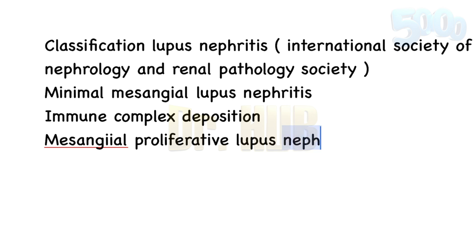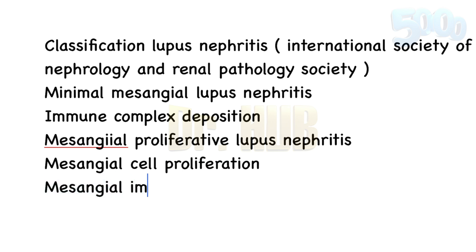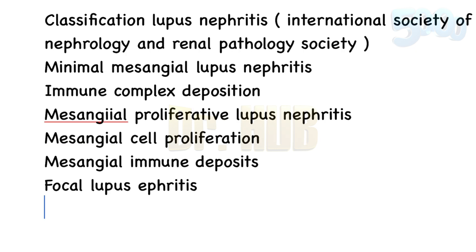Next is Class 2: mesangial proliferative lupus nephritis. This involves mesangial cell proliferation along with mesangial immune deposits.